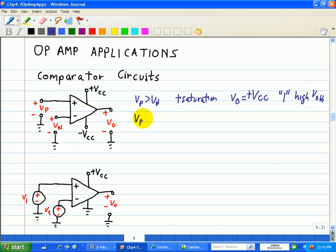On the other hand, if VP is less than VN, then it's at negative saturation. Then it rails, our output rails to the minus VCC power supply. And this is a digital zero or our low, or VOL, our low end.